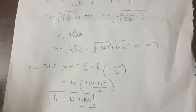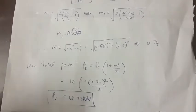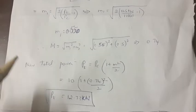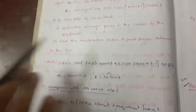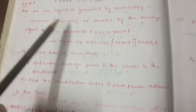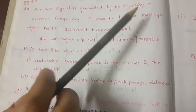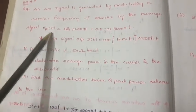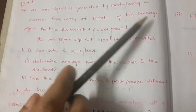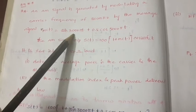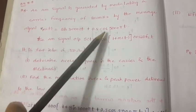The key step is to always calculate the effective modulation index first. Next, we move on to a similar problem. We consider an AM signal generated by modulating a carrier at a frequency of 800 megahertz, with a message signal output.